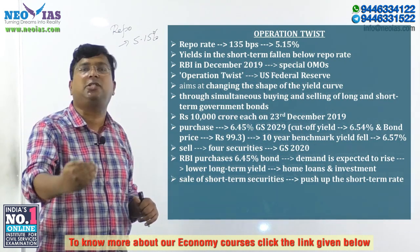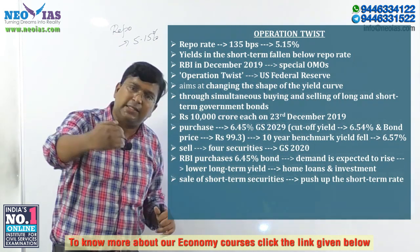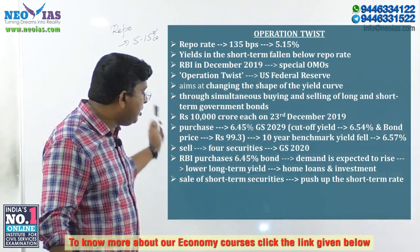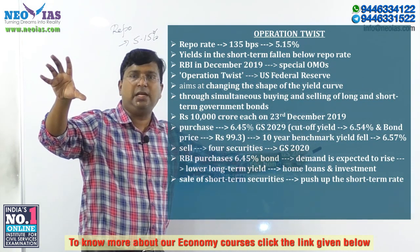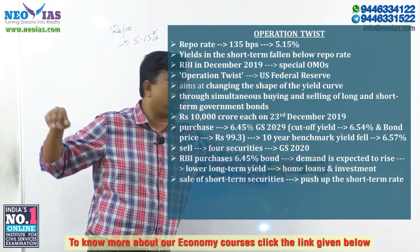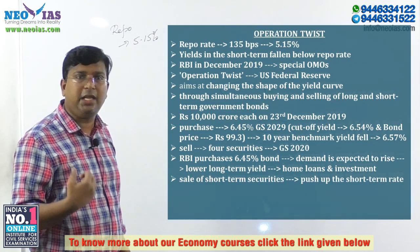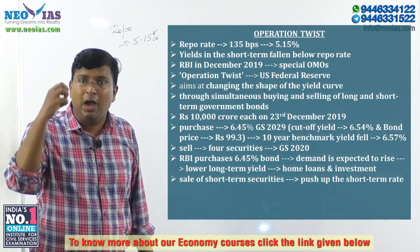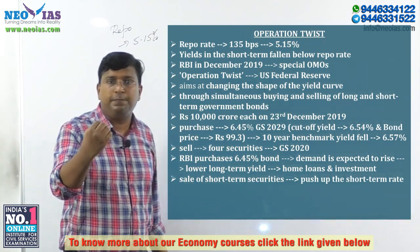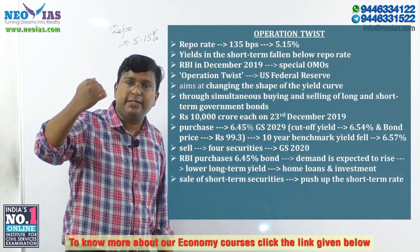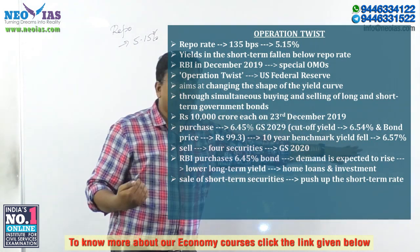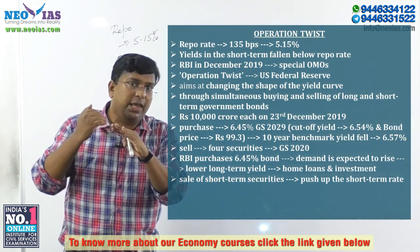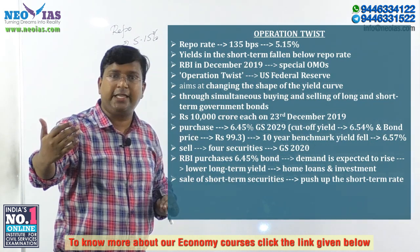After December 23rd, the 10-year government security yield almost reached 6.57%. On December 23rd, RBI set a cutoff yield at which it purchased the 10-year government security, and the market's 10-year benchmark yield fell to 6.57%. RBI was able to attain its goal — the 10-year government security yield fell to 6.57%.